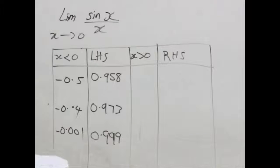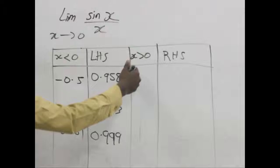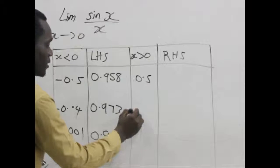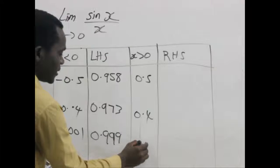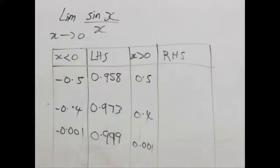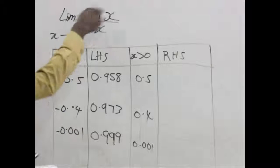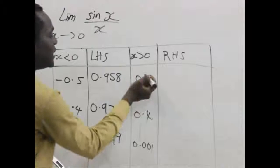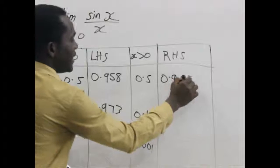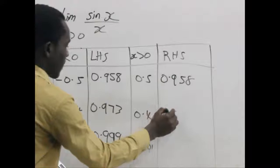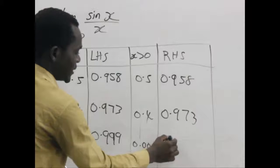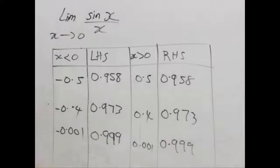Now let's also take some values that are greater than 0 but nearer to 0. Let's take 0.5, 0.4, 0.001. What you note is that for this function, it's an even function. When you put both negatives and positives in it, you still get the same values. Computing these, you have 0.958, then 0.973 and beyond, and 0.999 and beyond.